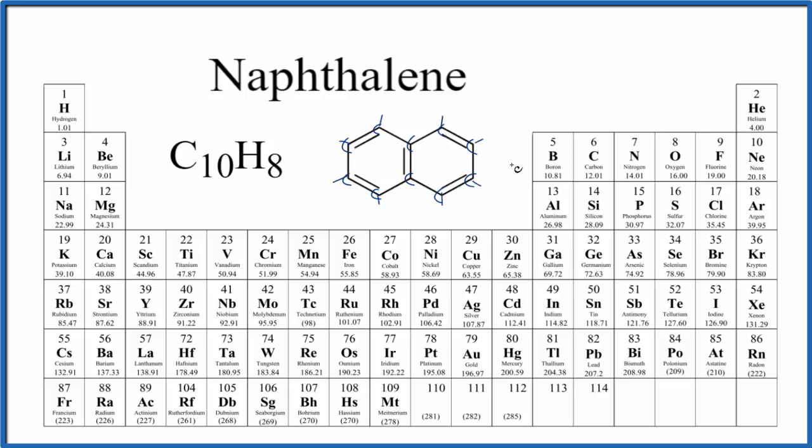If you count up the carbons and the hydrogens, you end up with C10H8. So this is the structural formula for naphthalene, and this is our molecular formula. We use this C10H8 molecular formula to find the molar mass for naphthalene.